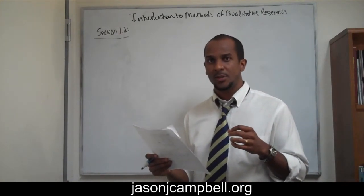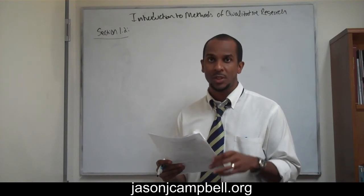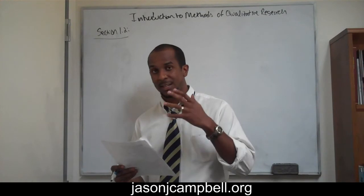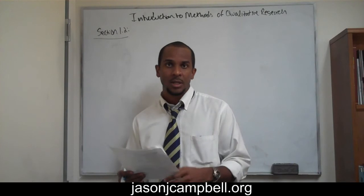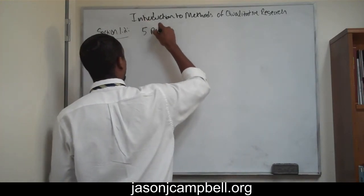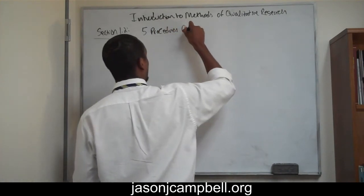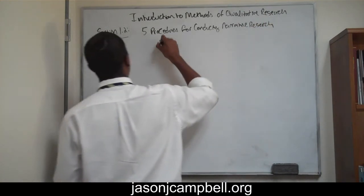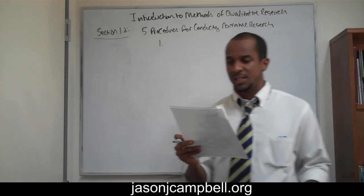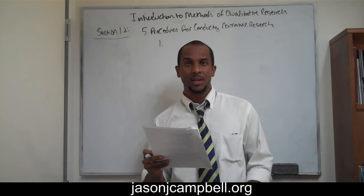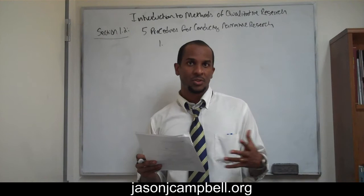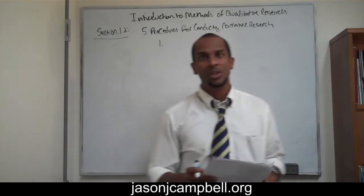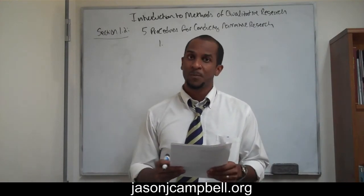In this discussion, I'm going to talk about five procedures for conducting narrative research. These are not exhaustive — they're just suggestions, and there might be more than five. The first procedure is to recognize that narrative research is best implemented among individuals or a small number of subjects. The best N for narrative research is typically less than five. You don't want 20 or 25 participants — that's way too much data to collect.